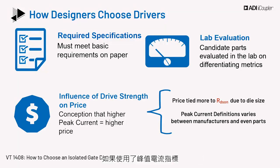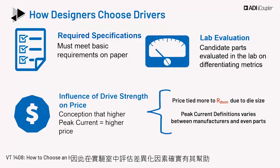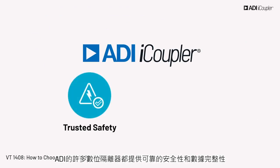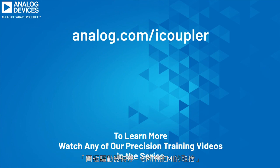If peak current is a metric used, parts are sometimes unfairly disqualified — either too low or too high can disqualify parts from consideration. There are other metrics which need to be taken into account, and hence evaluating differentiators in the lab really helps. Analog Devices has many digital isolators that provide trusted safety and data integrity. To learn more, please watch the next in our Precision Digital Isolation Video Training Series on the Fundamentals of Isolated Gate Drivers.